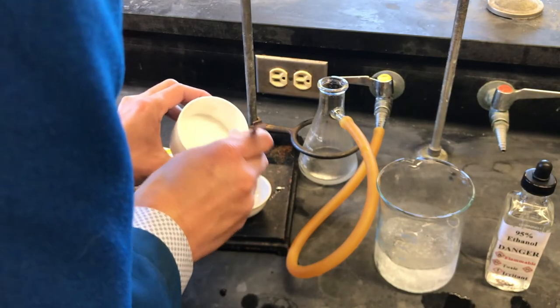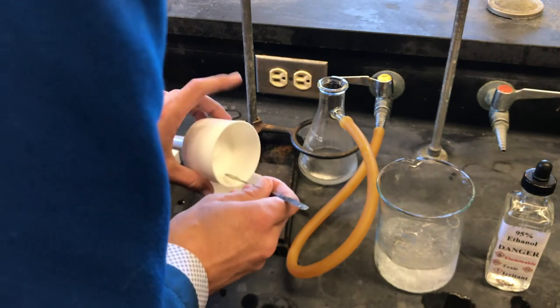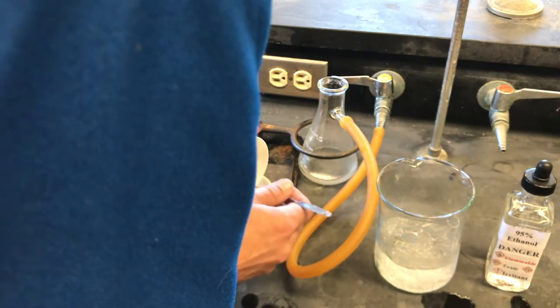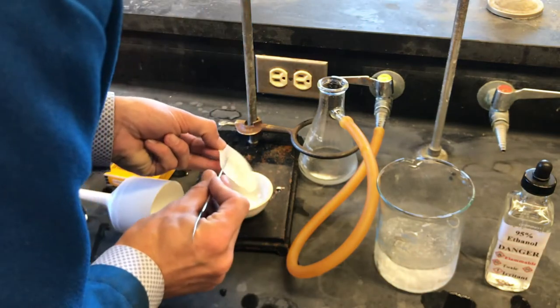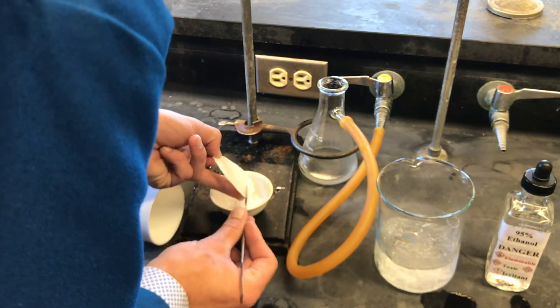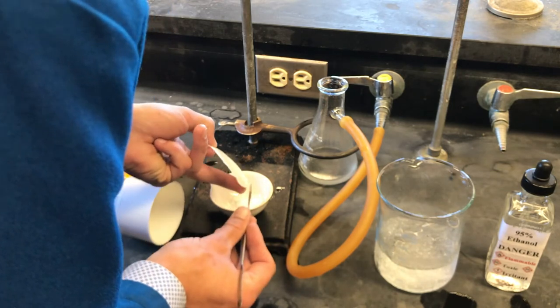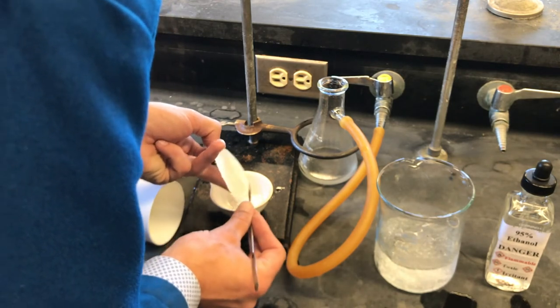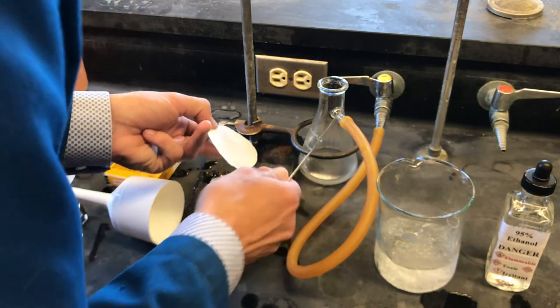Now, as carefully as we can, we'll transfer all of the alum to the evaporating dish. It's important to note that this is a major source of loss. Any product left behind in the Buchner funnel will reduce our overall yield calculated at the end of the experiment.